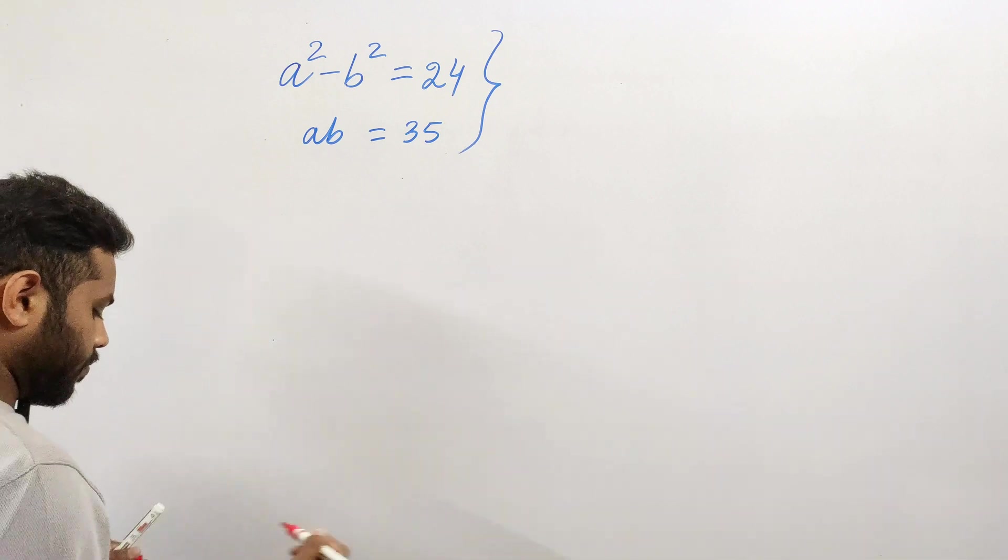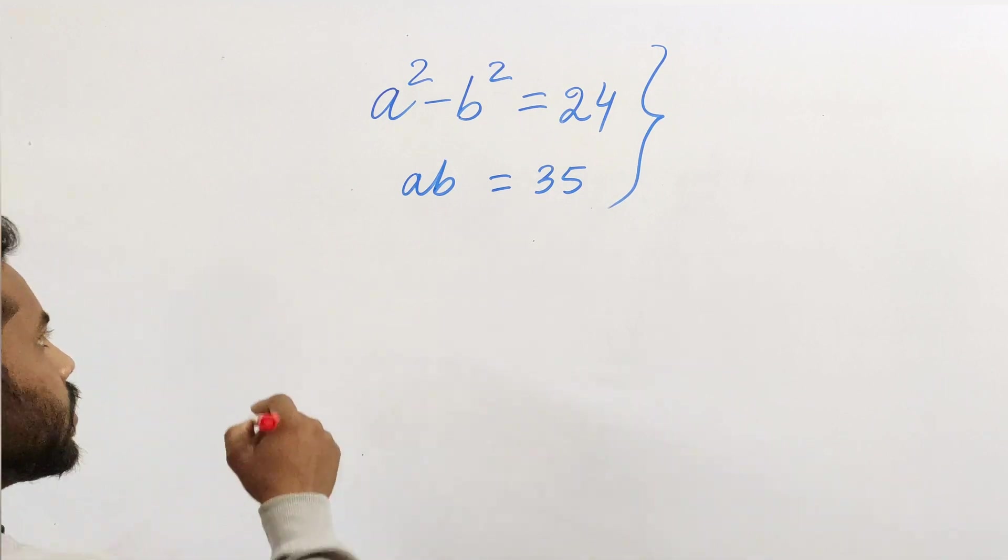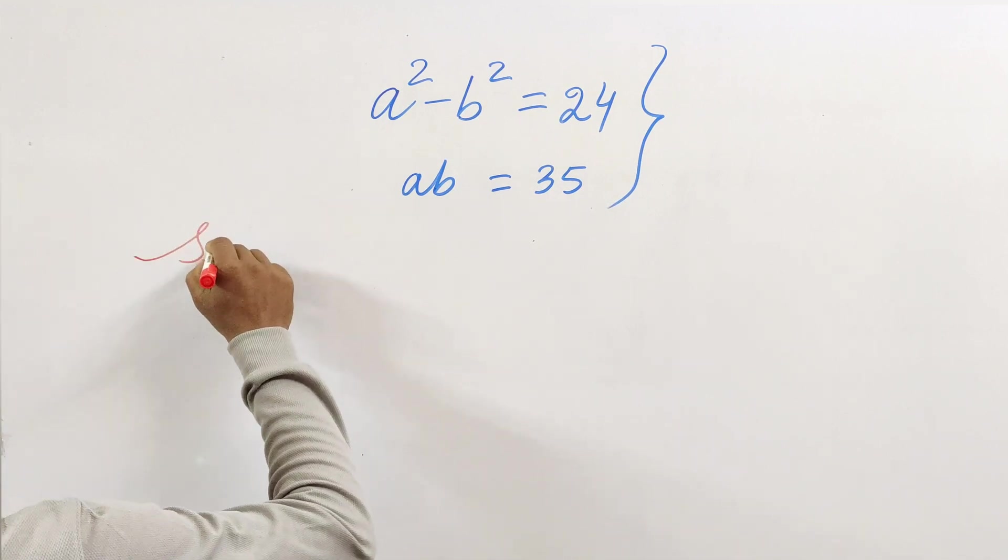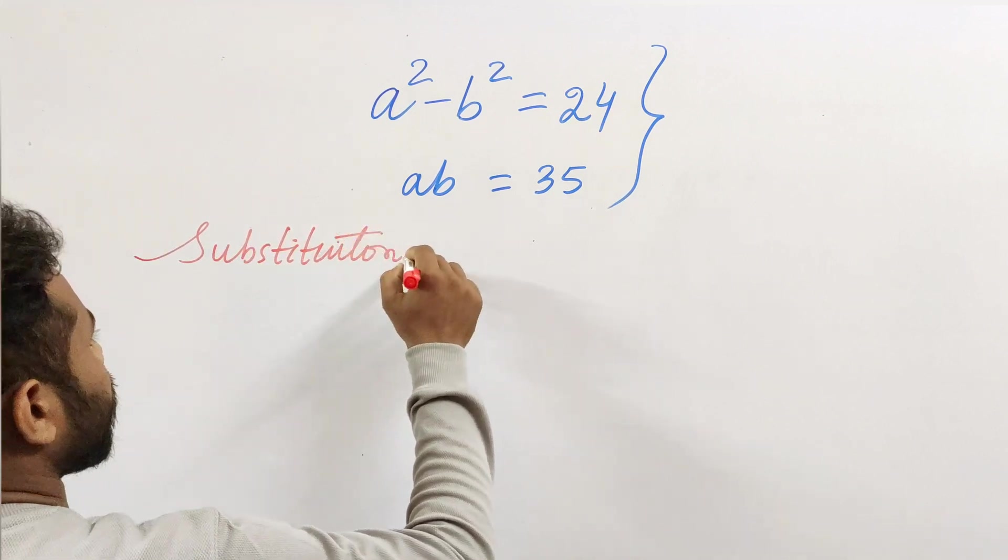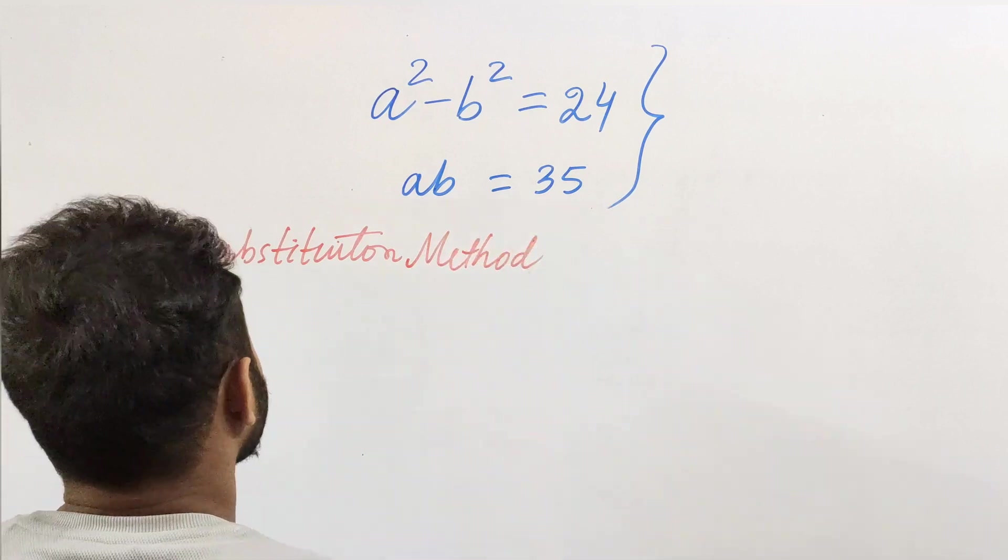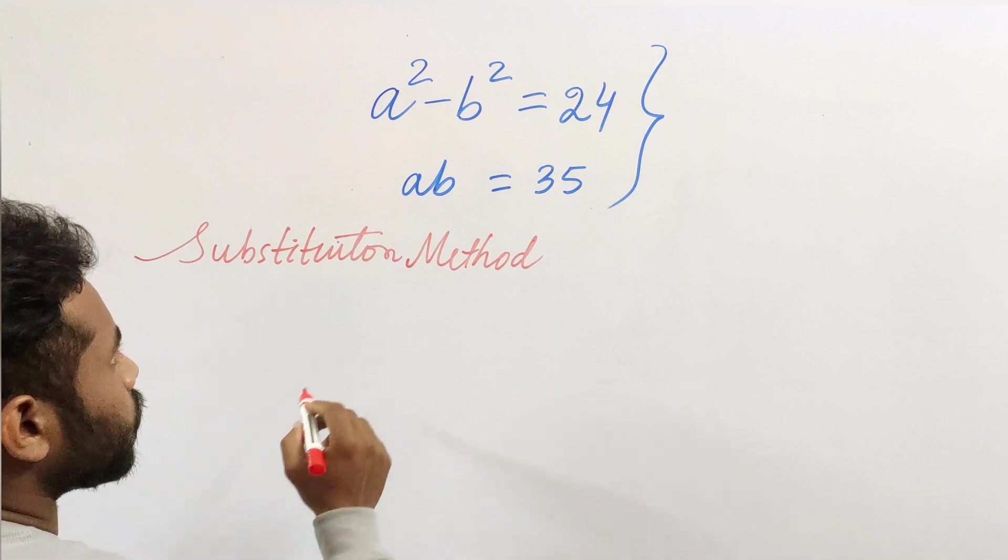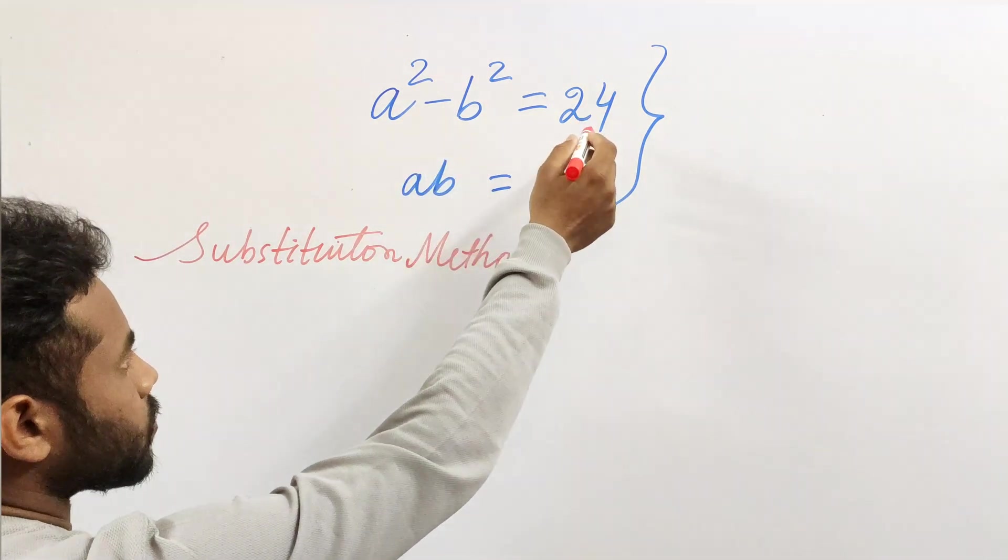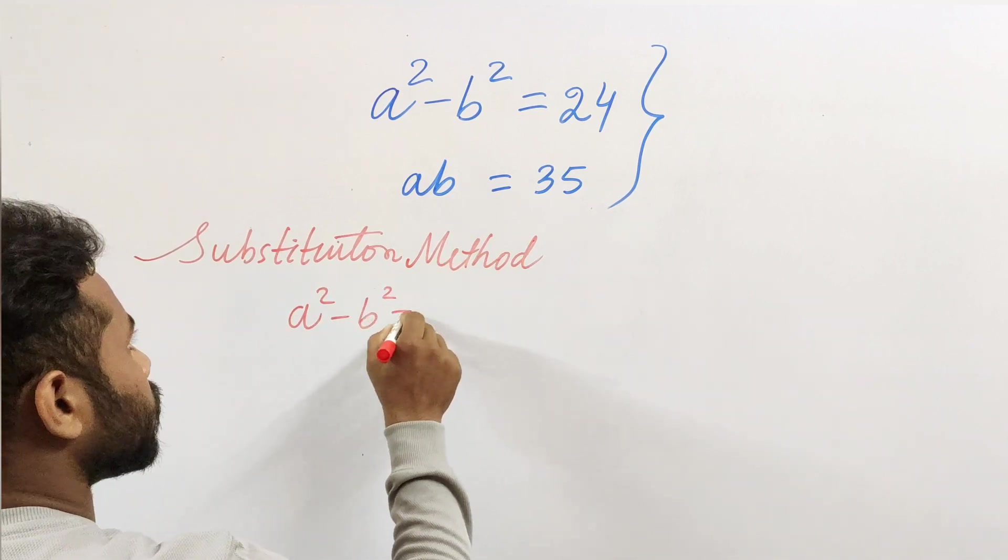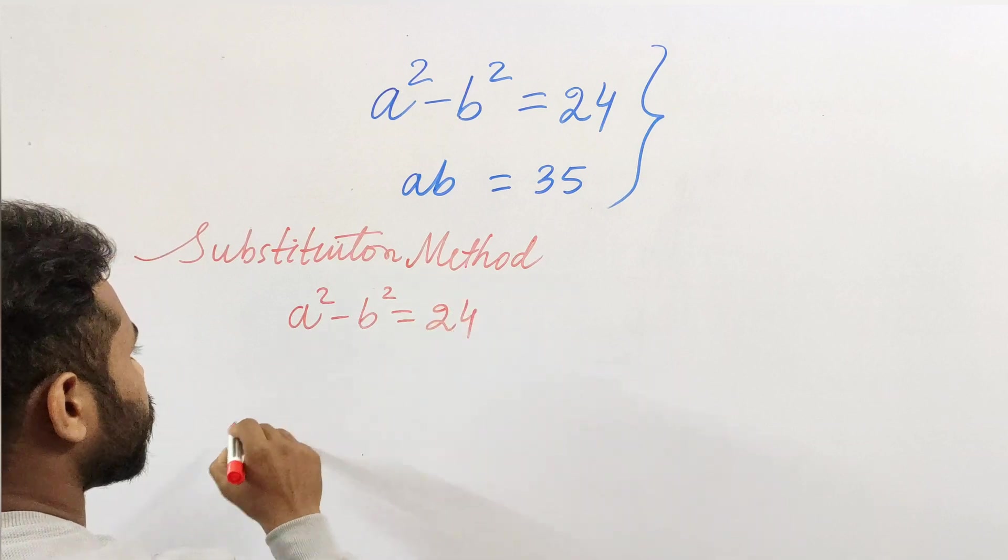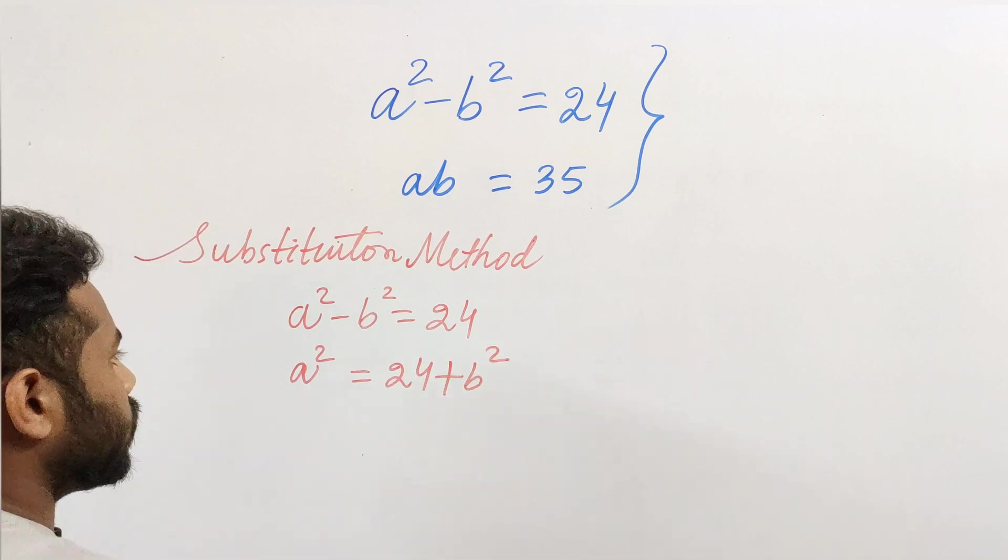So I will use the substitution method—comment your method if you have any easier way to solve this. For substitution, I will take the value of a from the first equation and substitute it in the second equation. So a² - b² = 24, which means a² = 24 + b². Let's use it.